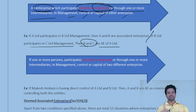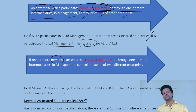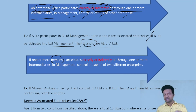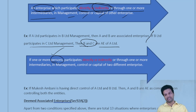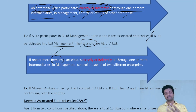Point number one talks about enterprises — companies, LLPs, partnership firms, etc. Point number two talks about persons. Whoever, directly or indirectly or through one or more intermediaries, has management, control, or capital of other enterprises — if they have decision power — then those enterprises are said to be associated enterprises.